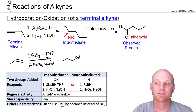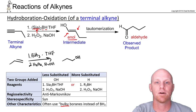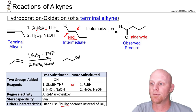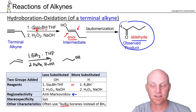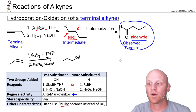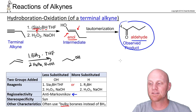This addition goes anti-Markovnikov: the less substituted carbon gets the OH and the more substituted carbon picks up the H. We form an enol intermediate, which tautomerizes to give the keto product — technically an aldehyde. So when we do hydroboration oxidation with a terminal alkyne, we get an aldehyde instead of the ketone seen in acid-catalyzed hydration. This is a syn addition, though that's less likely to be tested.